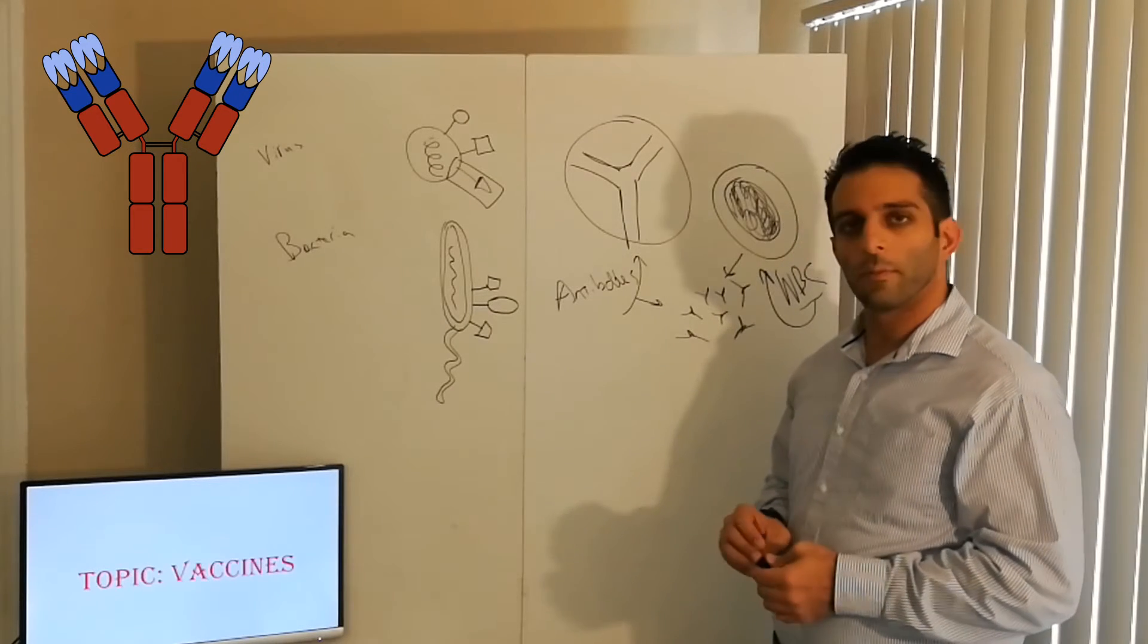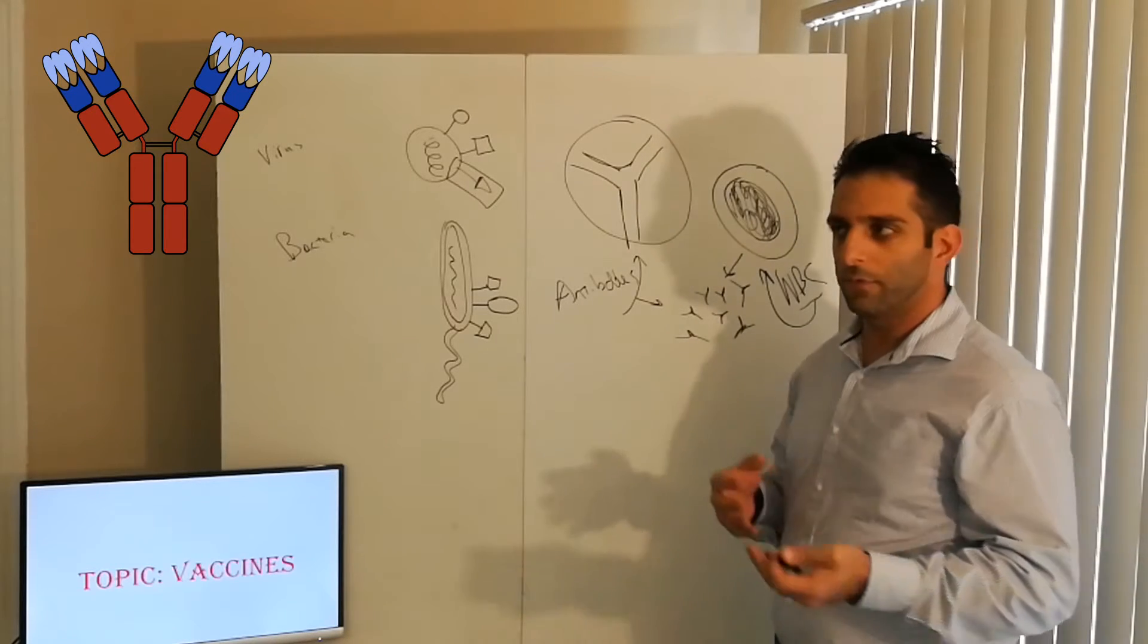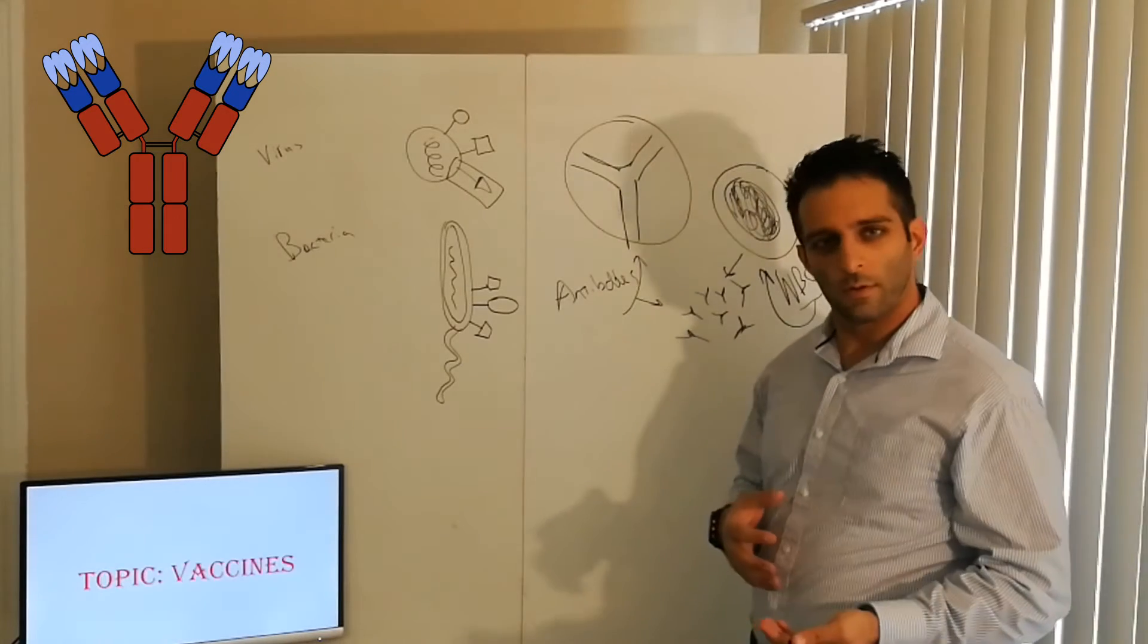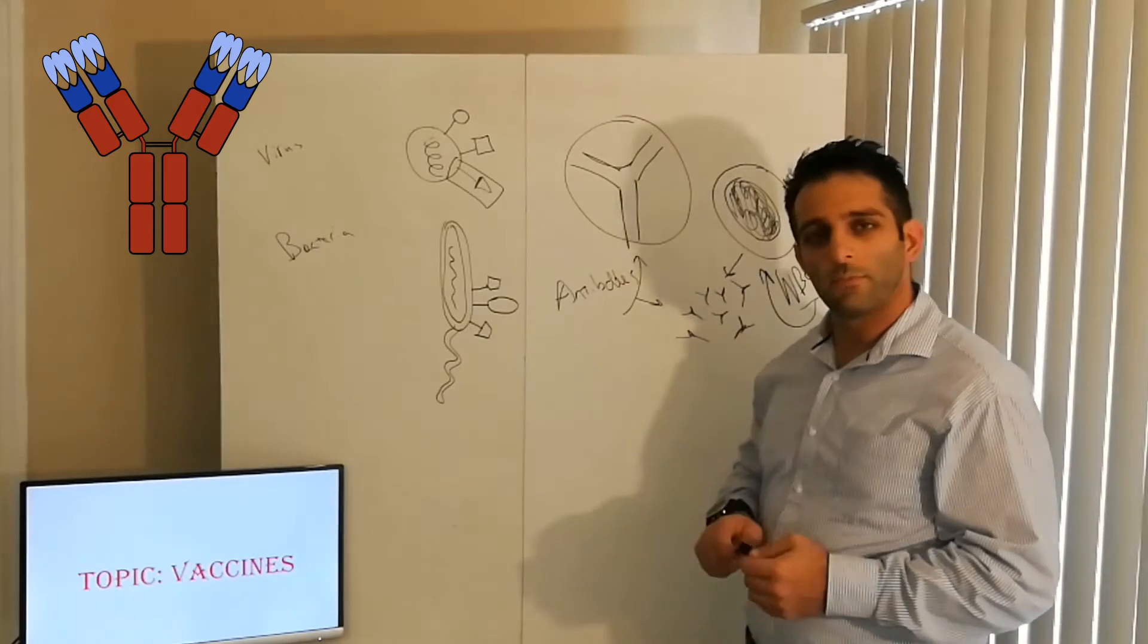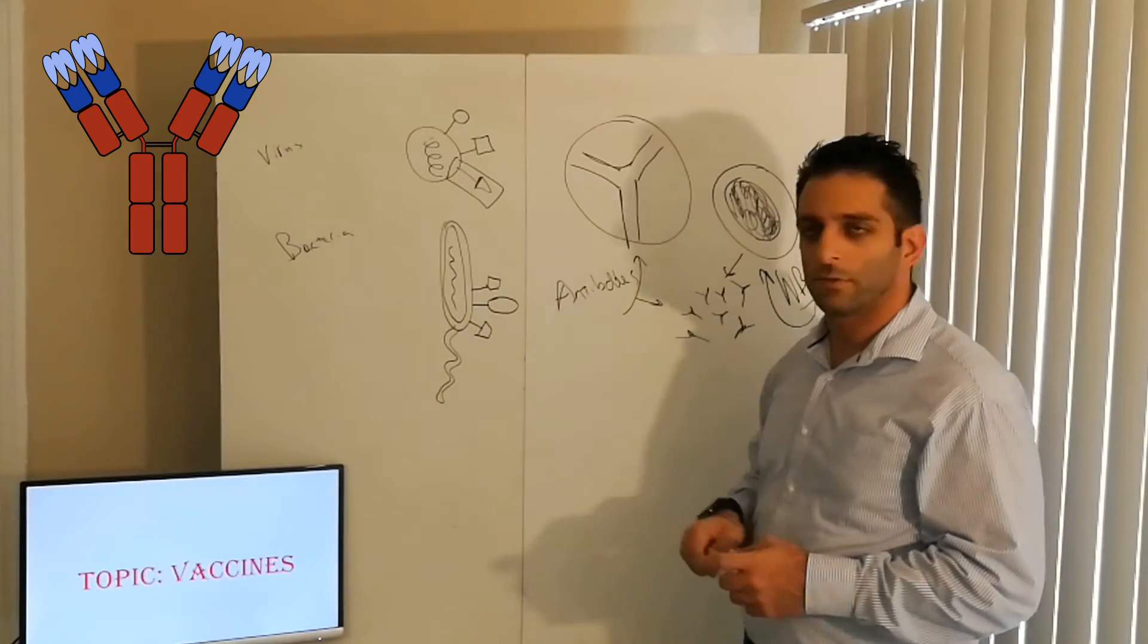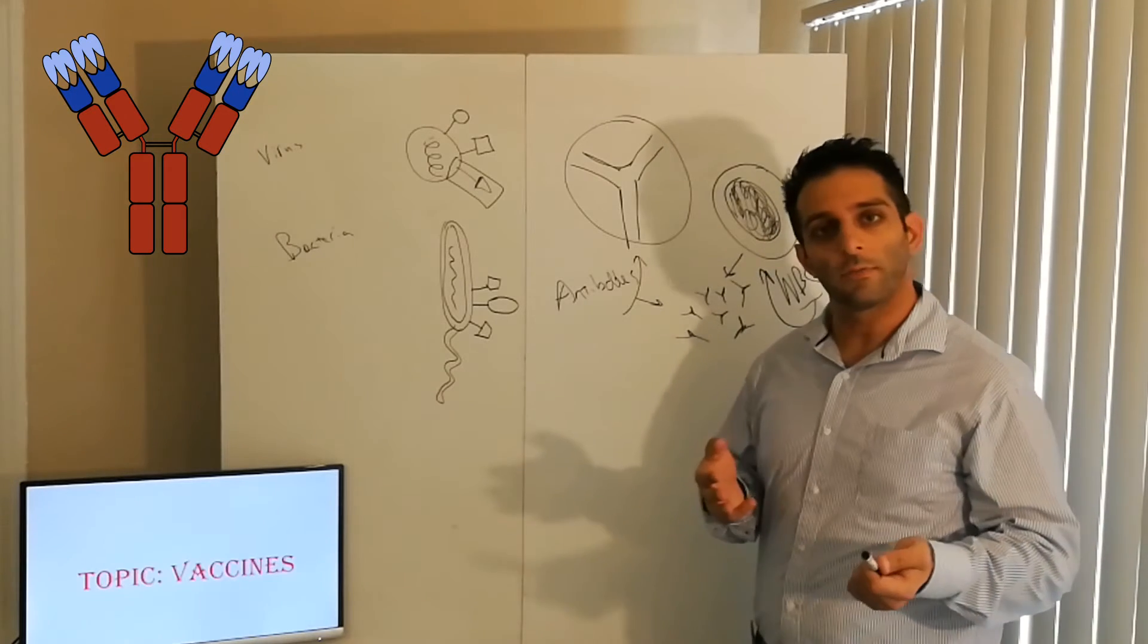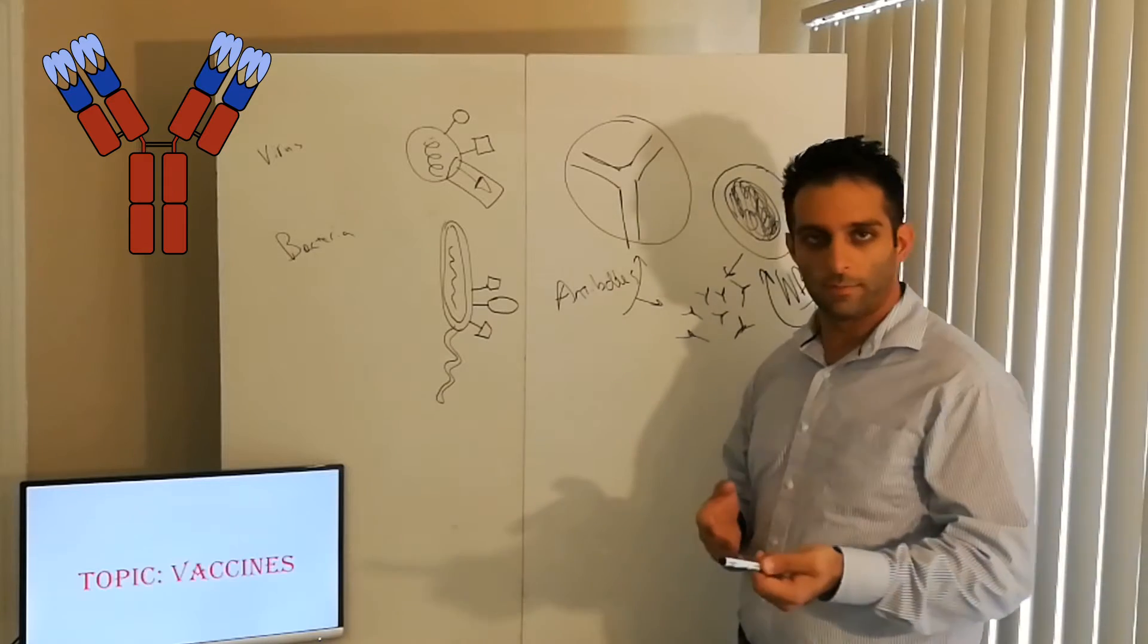The other function, a little bit more important, they're markers in the body. Similar to how trees get marked with an X before they're cut down in the forest. This kind of works in the same fashion. When this antibody binds to virus, to bacteria, or even your own cells, for example, it's a marker for the body to destroy it.